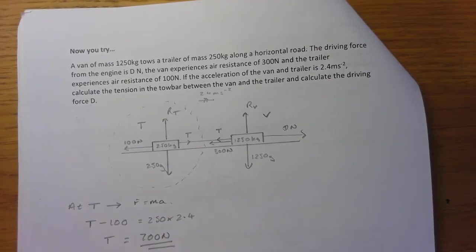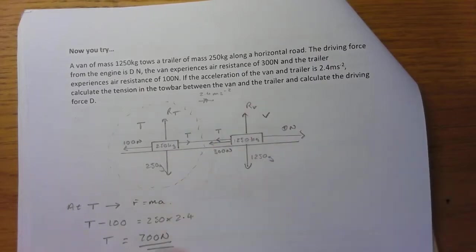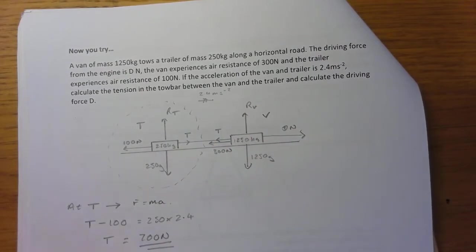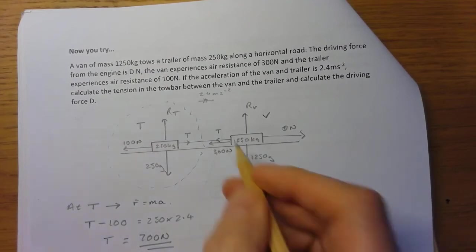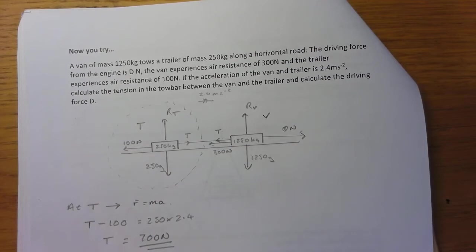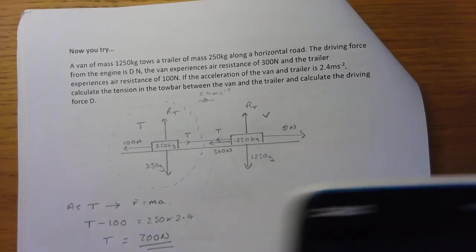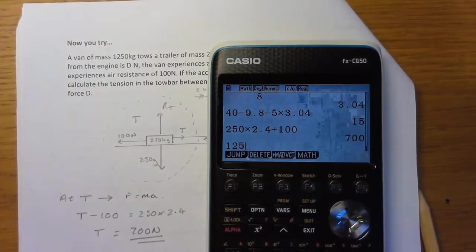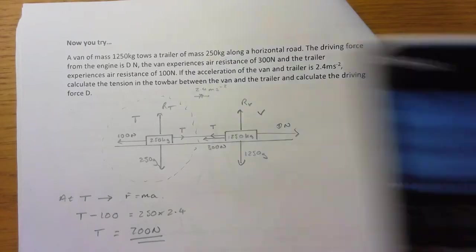Okay, so that's the tension in the tow bar. Now I need to find D, so I think the sensible thing to do here is to do at V. I'm going to go to the right and again I'm going to use Newton's second law. So this time I've got D minus T, which is 700, minus 300 equals mass 1250 times 2.4. So I can solve for D there. So that's going to give me 1250 times 2.4 plus 1000, which is 4000.